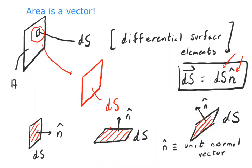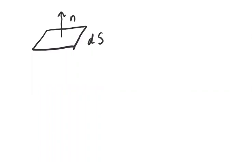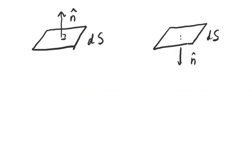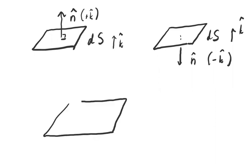There's some ambiguity. Here's a differential surface element dS, and here is a unit normal vector orthogonal to the surface — that's fine. But couldn't you have a unit normal vector pointing in the opposite direction? For example, if k-hat is up, the unit normal n-hat could point down or up. I have to figure out a way to resolve this ambiguity.